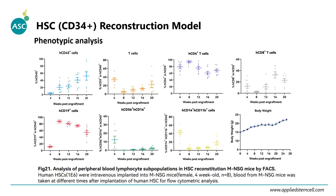To observe the change of blood lymphocytes in CD34-engrafted NSG mice, we can clearly see a large increase of human CD45-positive cells over time. T cells increase, including CD4-positive and CD8-positive T cells, as well as B cells. NK cells and myeloid cells can also be detected.